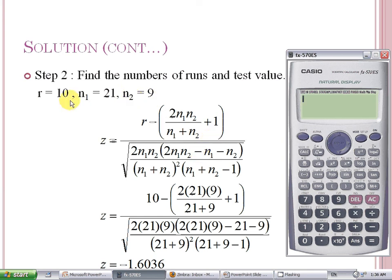You can see that the Z formula has R, N1, and N2 repeated many times.